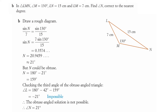Part B: In triangle LMN, angle M is 130 degrees. LN is 15 centimetres — that's the small m side — and LM is 7 centimetres — that's the small n side. Find angle N correct to the nearest degree. Draw a rough diagram and use the sine rule. Sine of N over 7 equals sine of 130 over 15. Use sine to the minus 1 on that expression, and to the nearest degree, N is approximately 21 degrees.